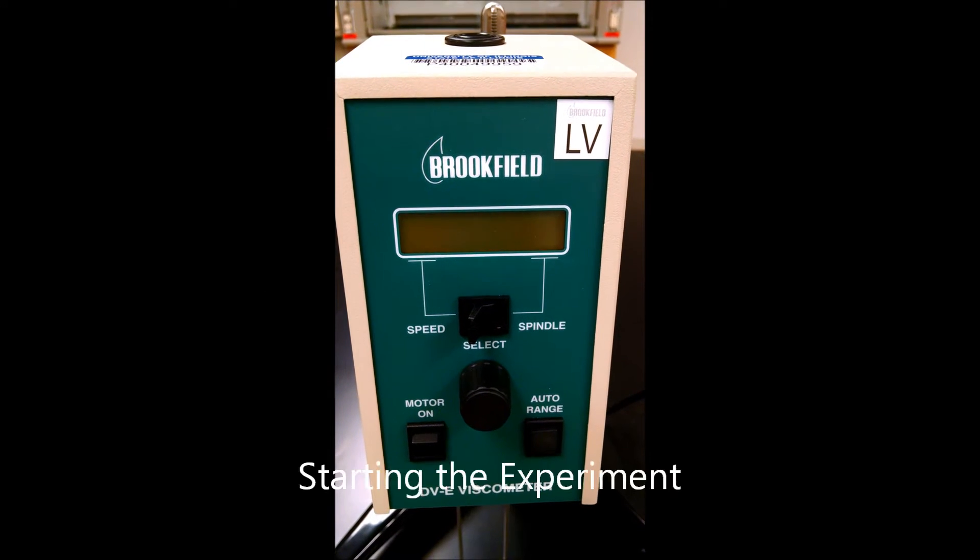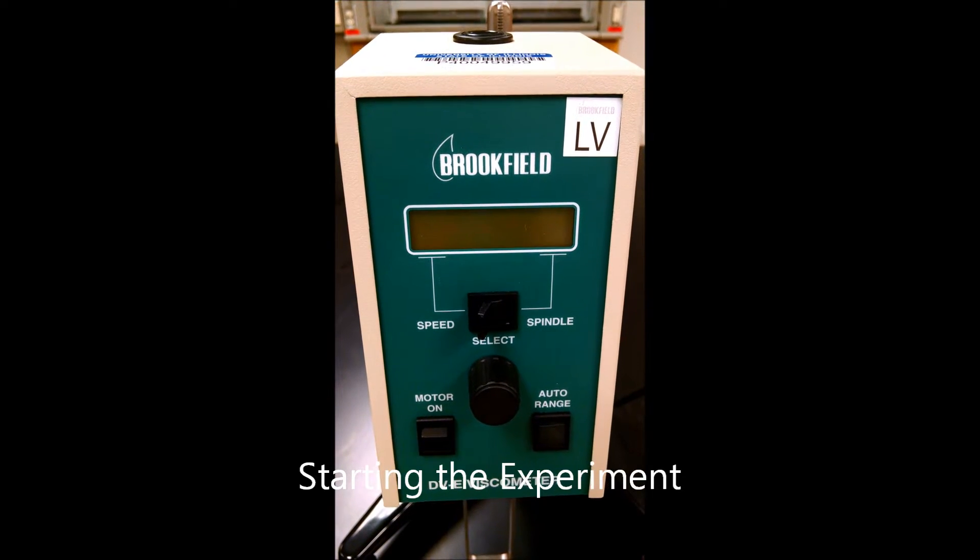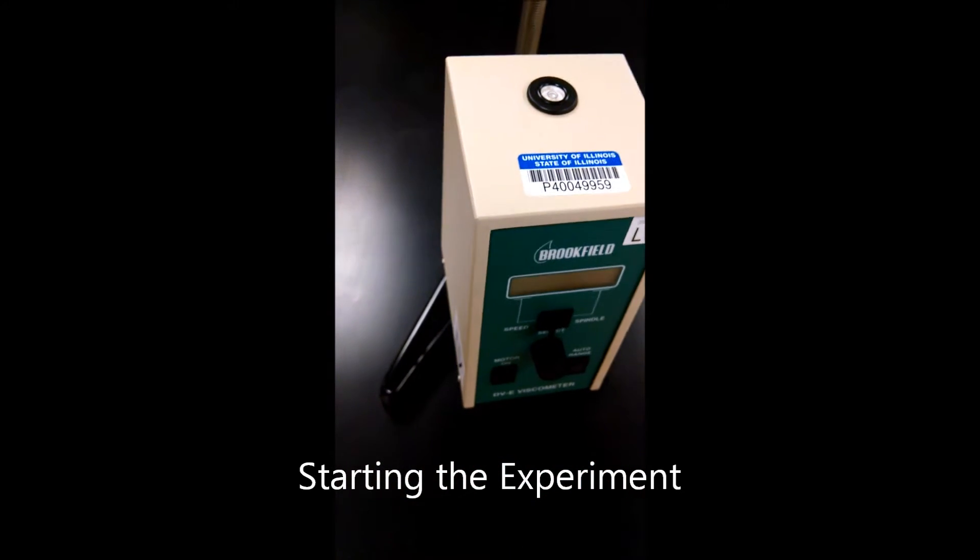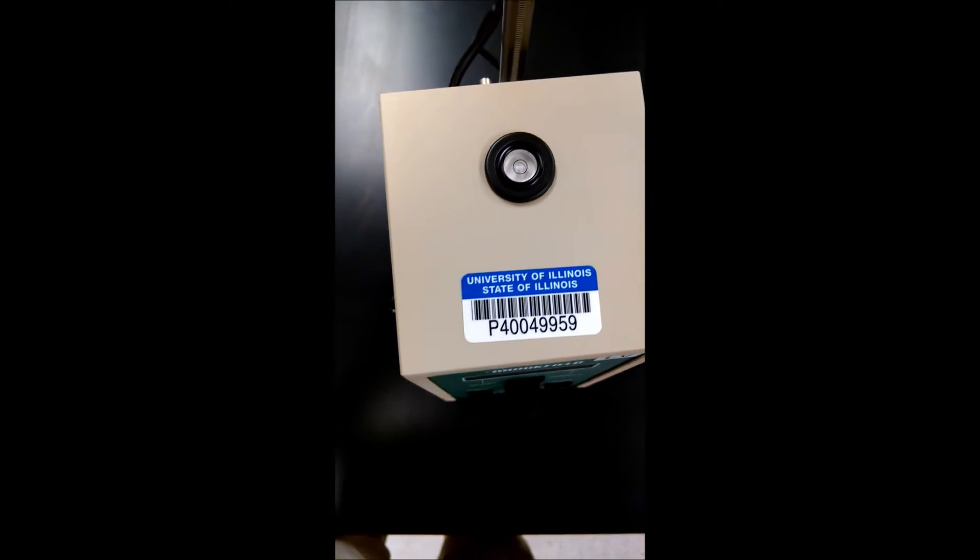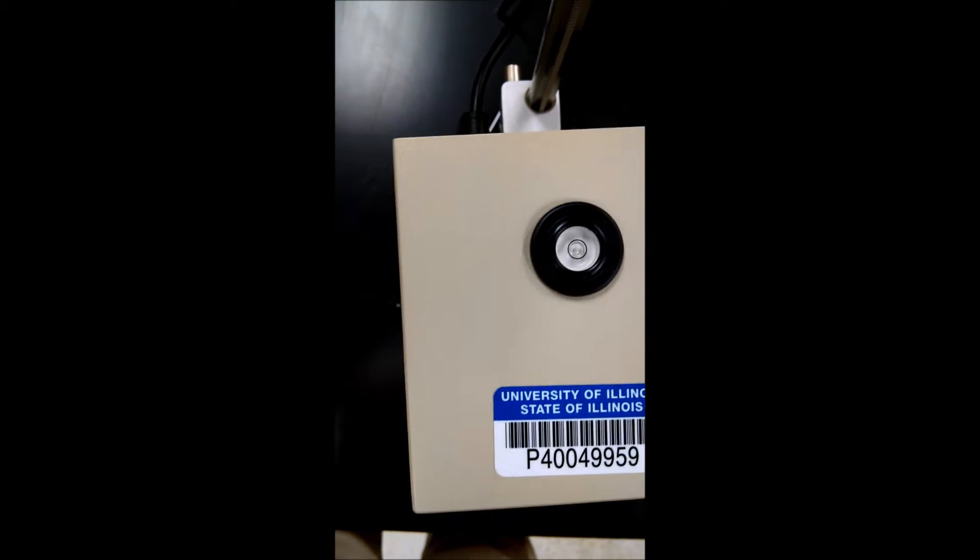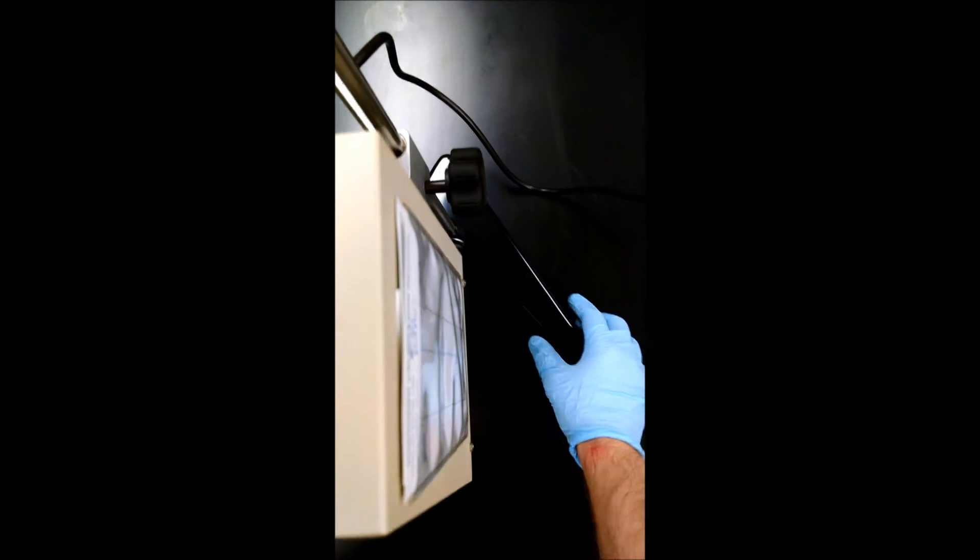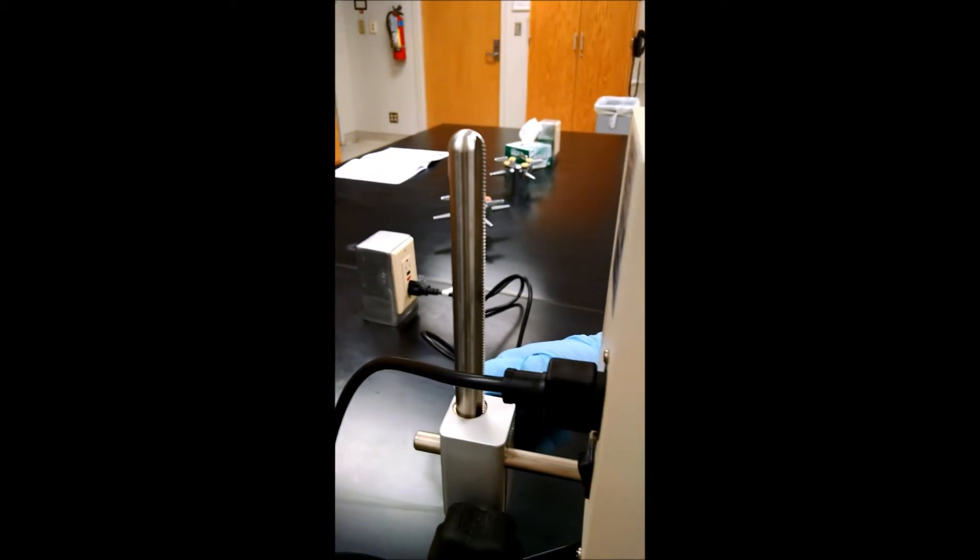In this video we'll show you how to use the Brookfield DVE Viscometer. The first thing you need to do is make sure that it is level using the leveling bubble window at the top. To adjust it to level, use the screw knobs at the base of the stand.